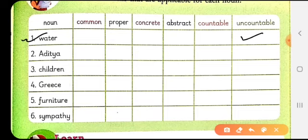You can color this box with any color. Then we have the word Aditya. It is a proper noun because it is the name of a specific person. Then we have the word children. Children is a common noun. So color this box with a different color.